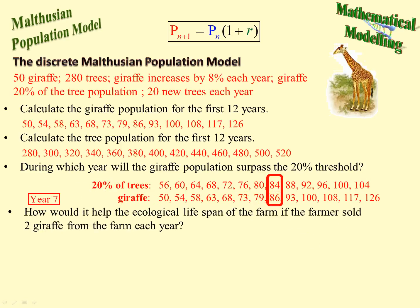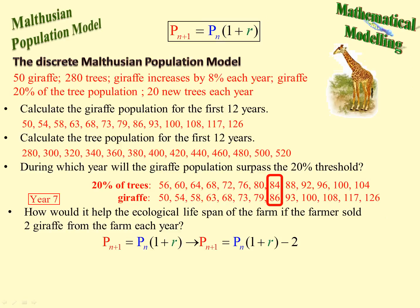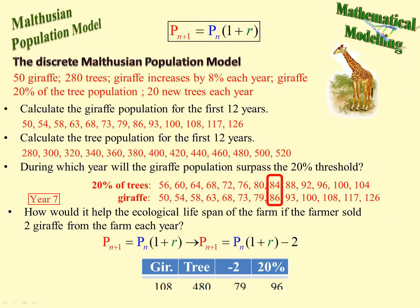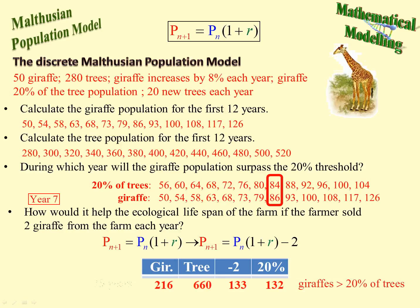So, 7 years. How would it help the ecological lifespan of the farm if the farmer sold 2 giraffes from the farm each year? That will alter our Malthusian formula — we now need to subtract 2, putting minus 2 at the end. We calculate each cycle in a table. The exceeding occurs when the giraffes surpass the 20% of tree population threshold: 133 giraffes after taking the 2 away, versus 132 which is 20% of the trees. That works out at 19 years — so it has increased the ecological lifespan by 12 years.